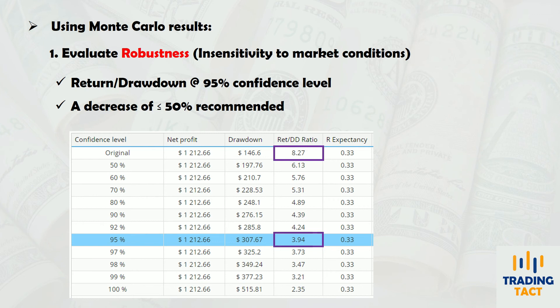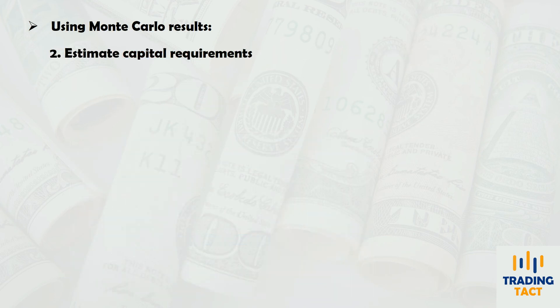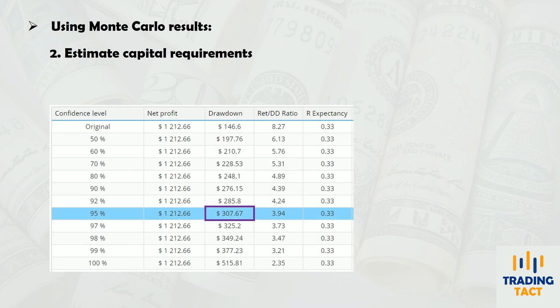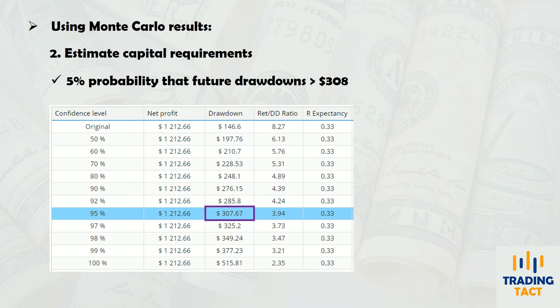Monte Carlo simulations can also produce a conservative estimate of your strategy's capital requirements. In this case, there is a $308 drawdown at the 95% confidence level. Assuming the historical backtest is representative of future results, there is only a 5% probability that future drawdowns will exceed $308. Using this drawdown value, instead of the $147 from the original backtest, creates a buffer should market conditions deteriorate in future.